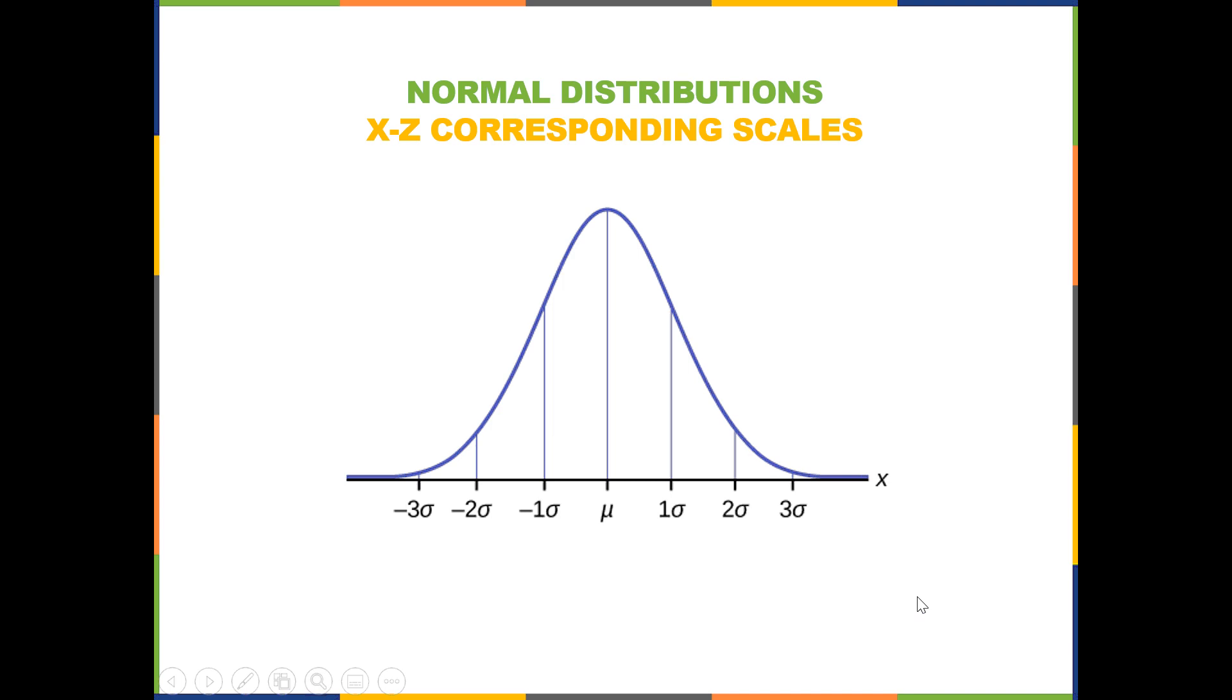All right, so now what do we do with this? We'll do some examples next. But before we do, I also wanted to point out that if you have a normal distribution with a mean of zero and a standard deviation of one, then these values would line up with the z-score scale.